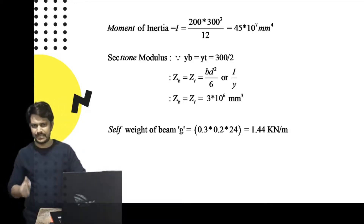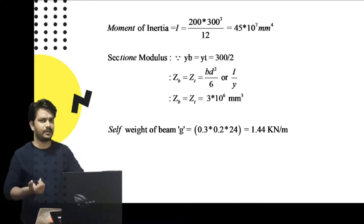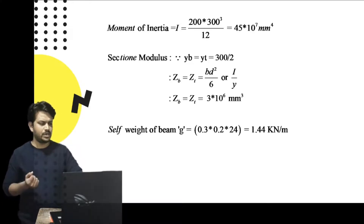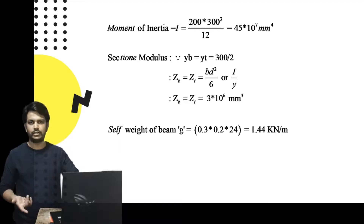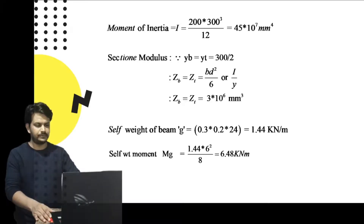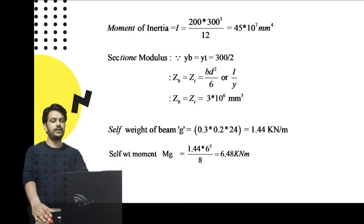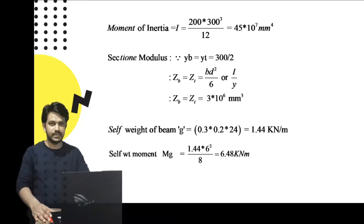Self-weight of the beam is cross-sectional area × density = 0.3 × 0.2 × 24 = 1.44 kN/m. The moment due to self-weight (dead load) is wL²/8 = 1.44 × 6² / 8 = 6.48 kN·m.